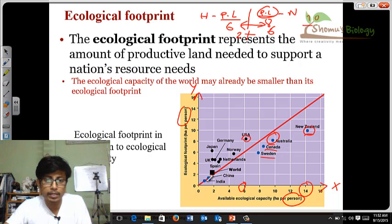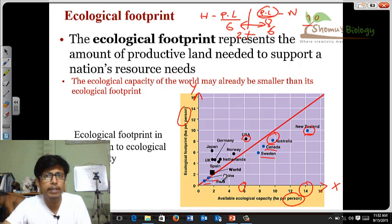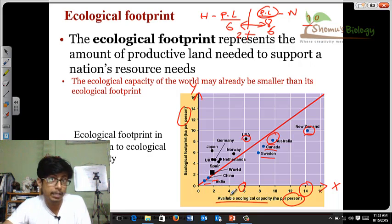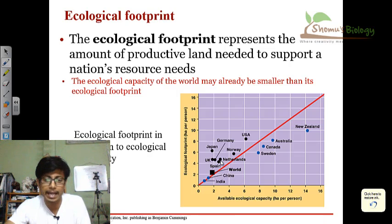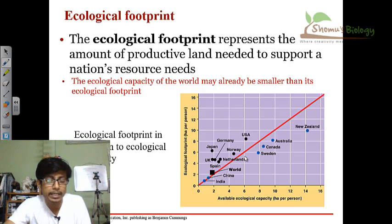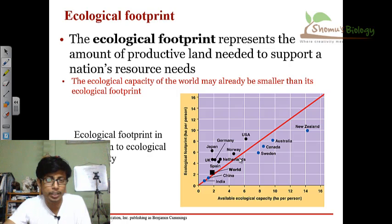It's good for them. But there are some countries which fall on the line itself — for example, India and China. These are developing countries where the productive land required is kind of balanced with the available ecological capacity. Now if they develop further, they will have a deficit because they will require more and more productive land but won't get it. That is the idea about the ecological footprint, and this graph provides a vital insight about different regions — whether they are developed or developing, their socioeconomic conditions, and how those countries will support their population in the future.